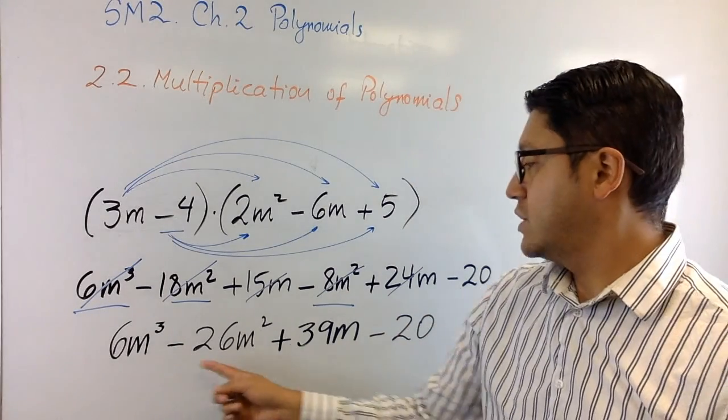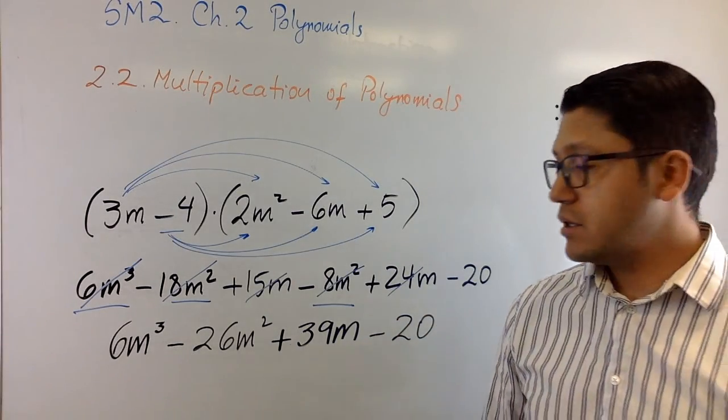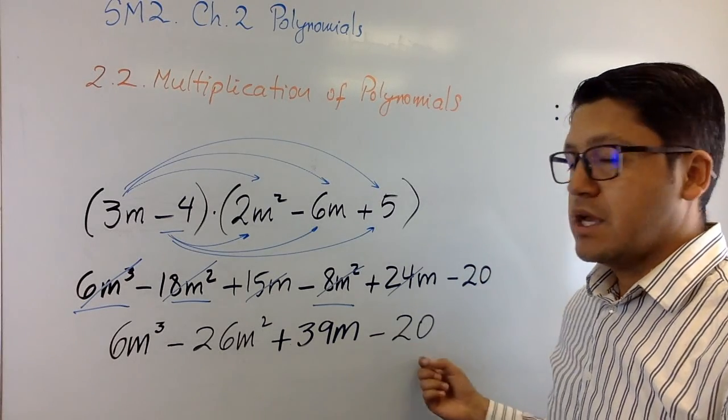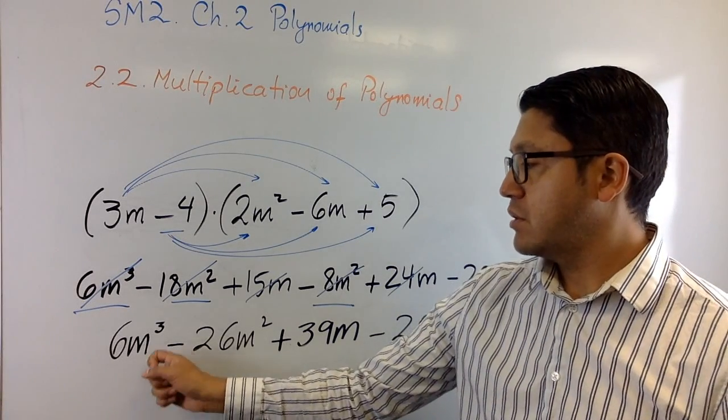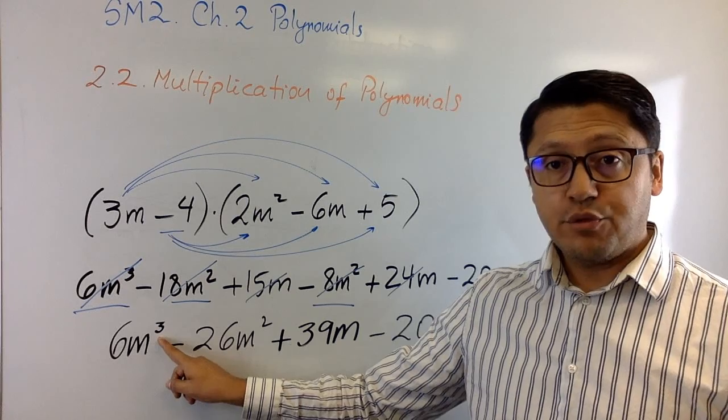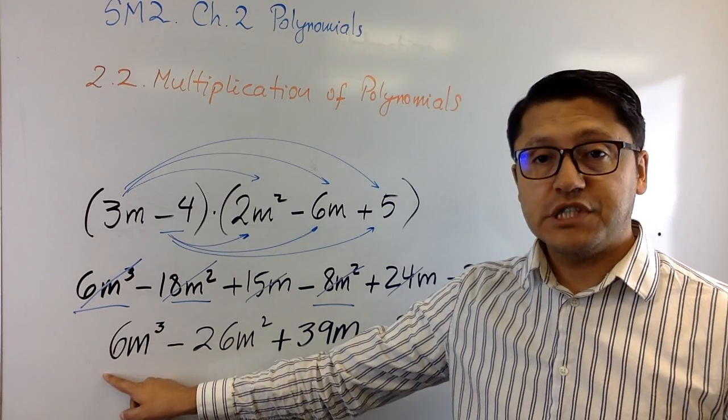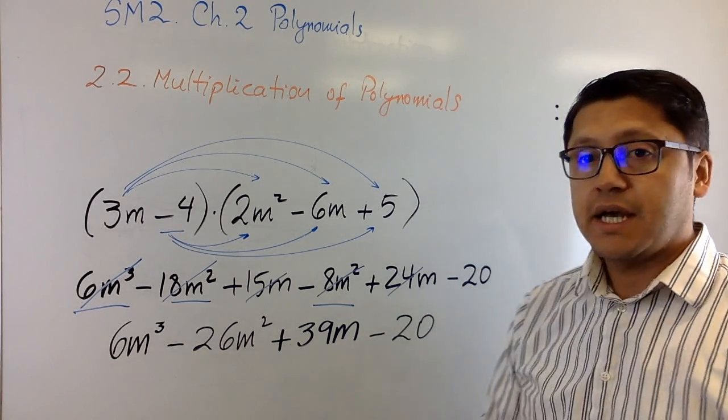As you may see, one, two, three, four terms. It's a polynomial. It's written in standard form. It's a polynomial with degree three, leading coefficient six. And that's it.